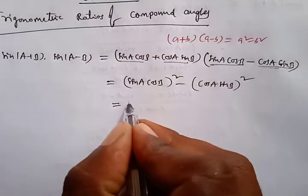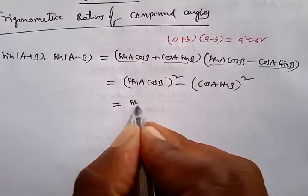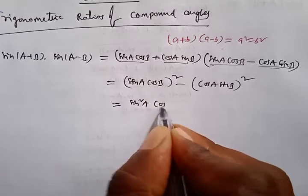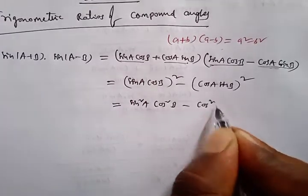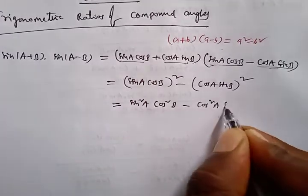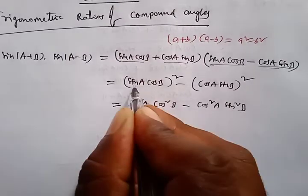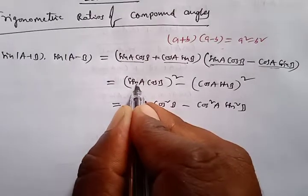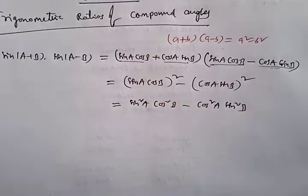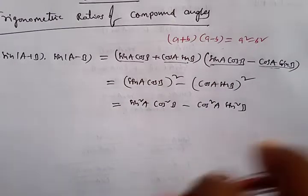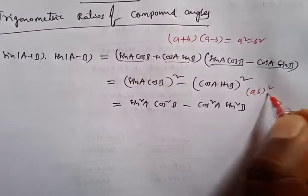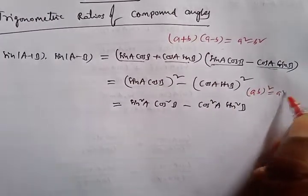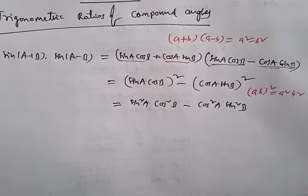Expanding this, we get sin²A·cos²B - cos²A·sin²B. The first bracket squared gives us sin²A·cos²B, and the second bracket squared gives cos²A·sin²B, using the identity (ab)² = a²b².